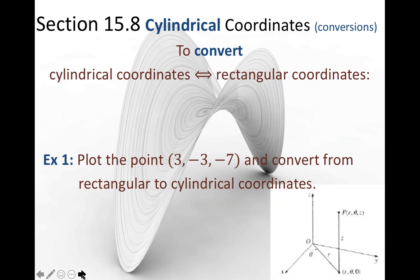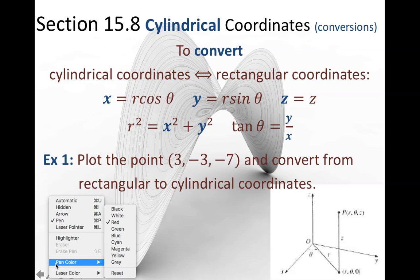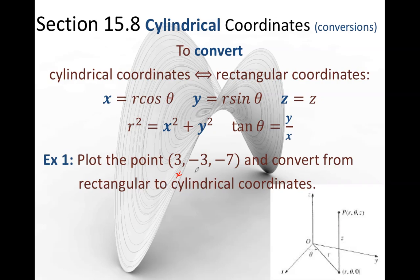So let's do our conversion. The conversions are the same. I said z was going to be z. So there's nothing new here. If I want you to plot the point 3, negative 3, negative 7 and convert, this is rectangular x, y, and z. And I want you to take it into r, theta, and z. So z doesn't change.